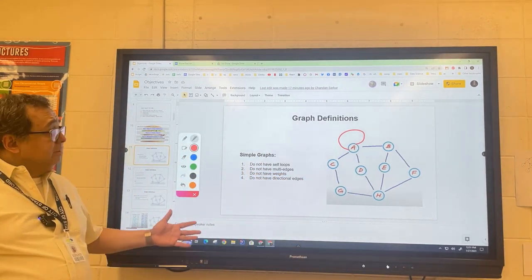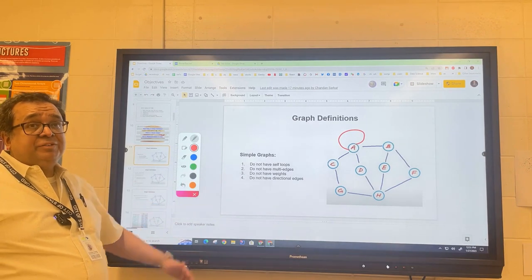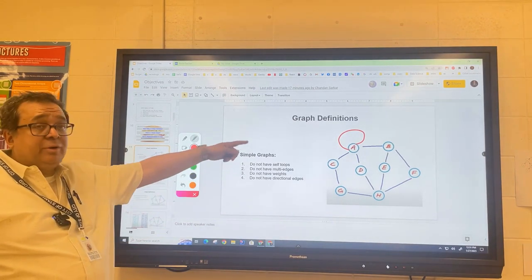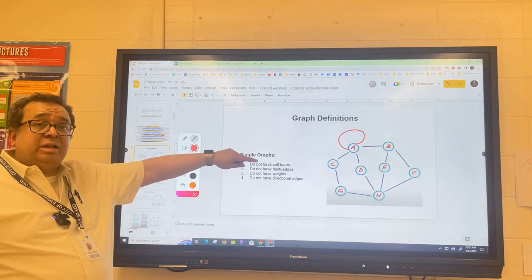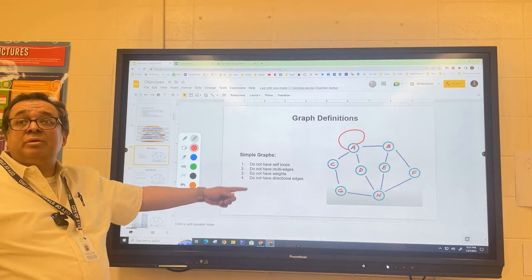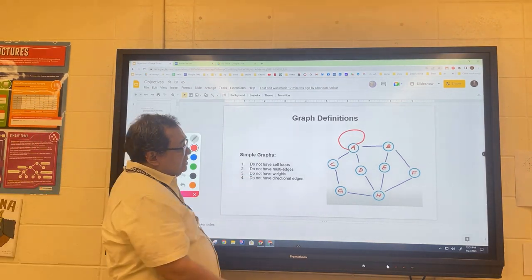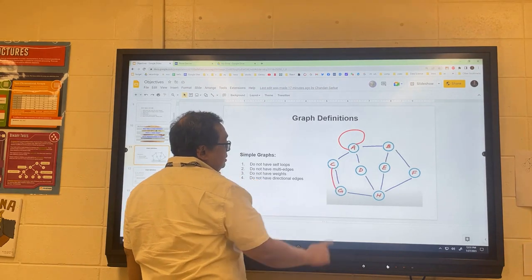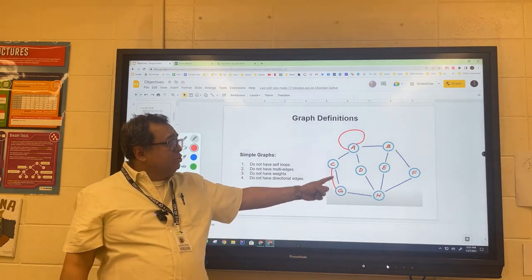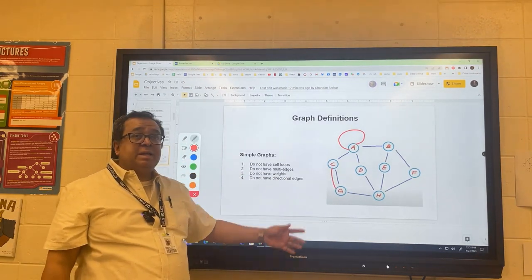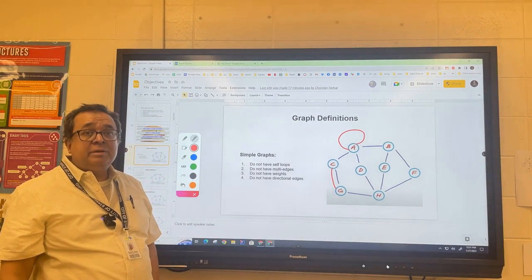Complicated or non-simple graphs are allowed to have self-loops, but in a simple graph we don't have edges that start and end in the same node. They also don't have multi-edges. For example, if I had this, you can see now there are two edges between C and G. That's not allowed in a simple graph.